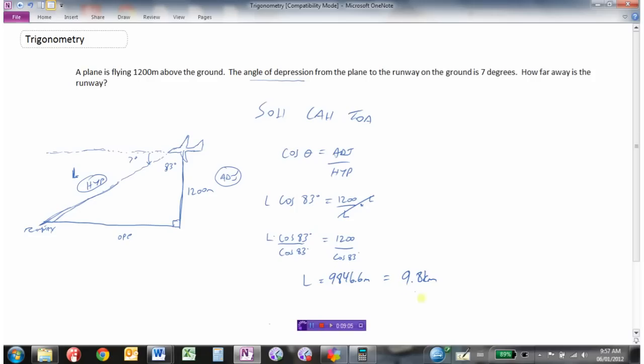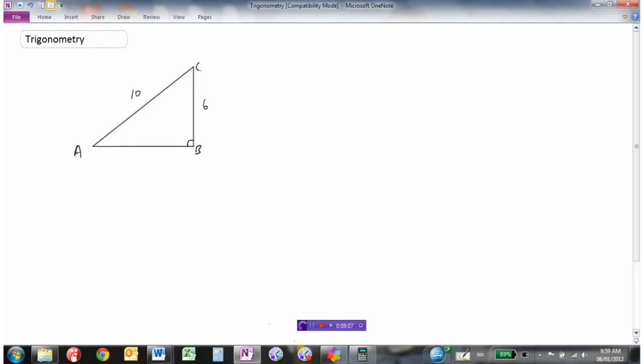And we'll look at one more example. Sometimes you'll get a triangle and the question will just say solve the triangle, which is really a short way of saying find all the angles and all the sides.